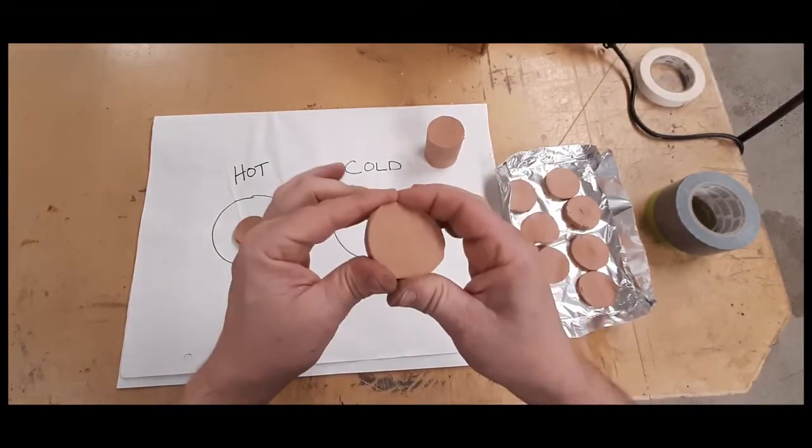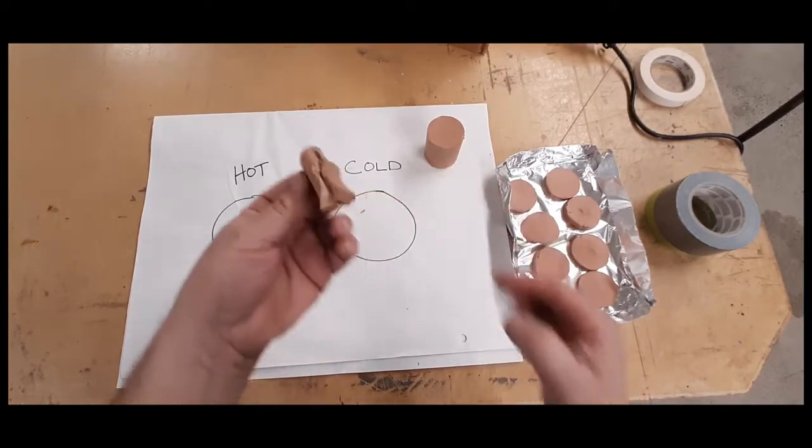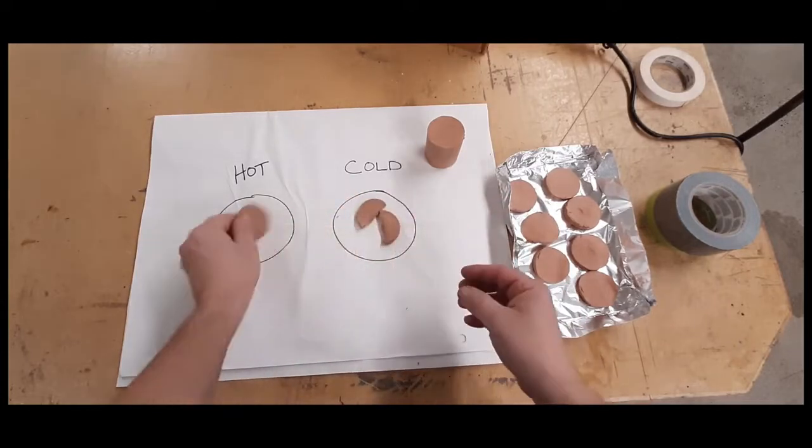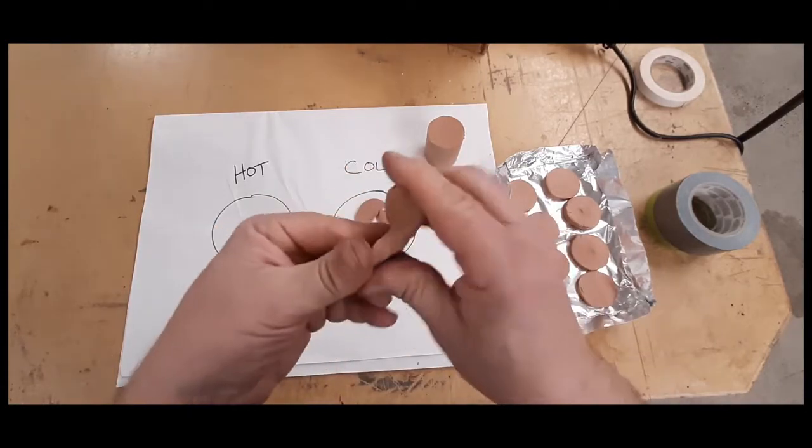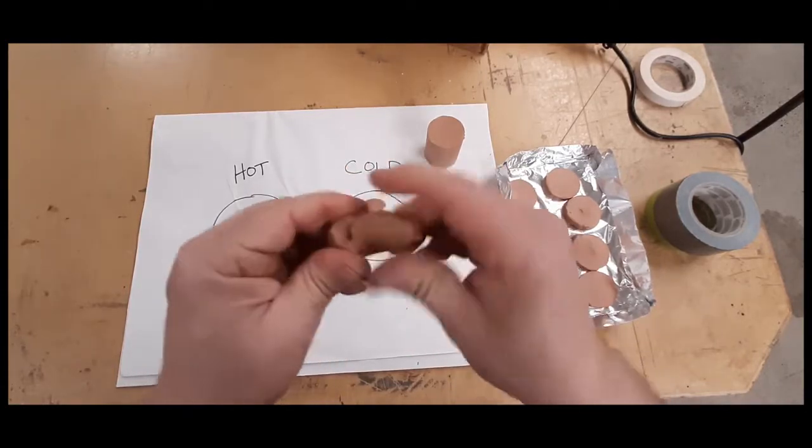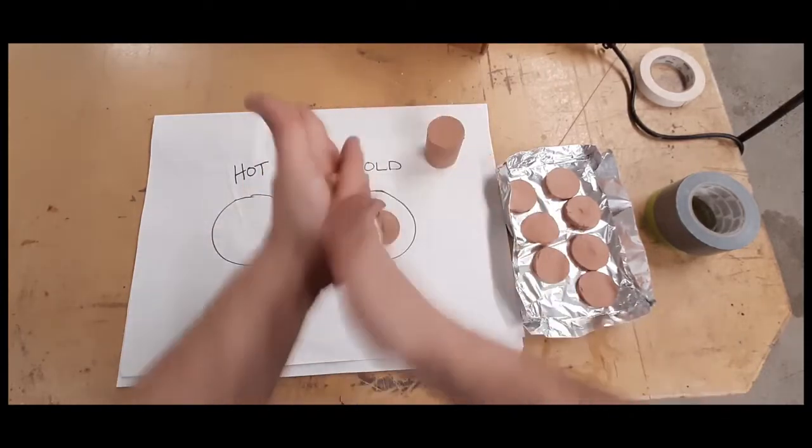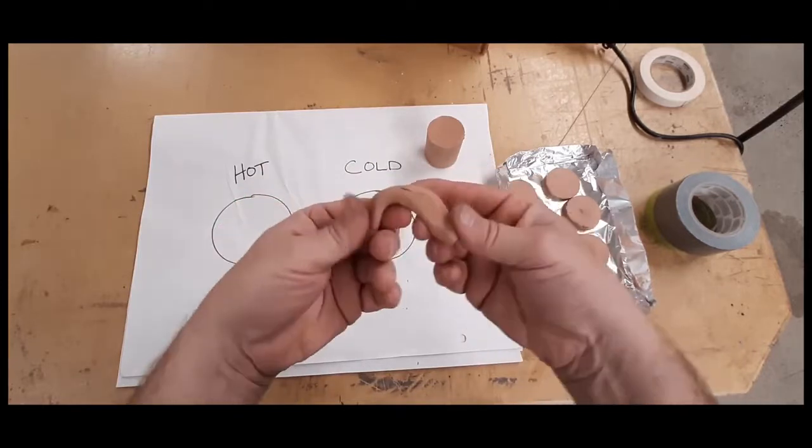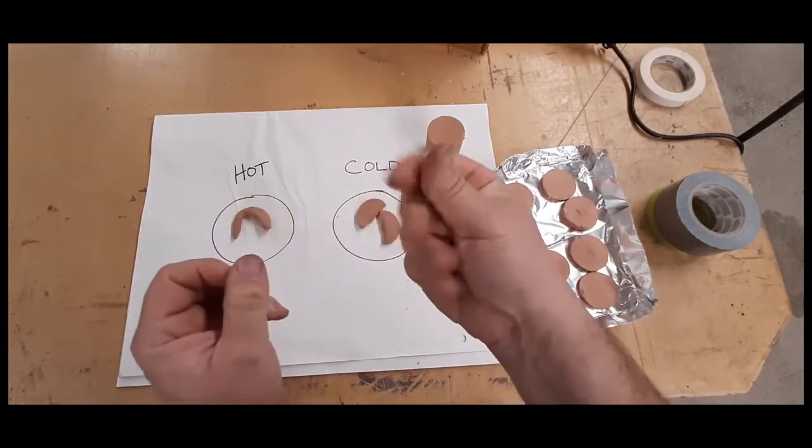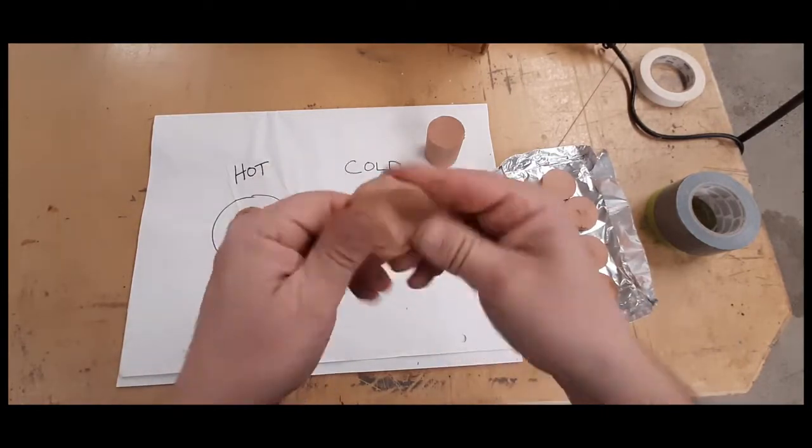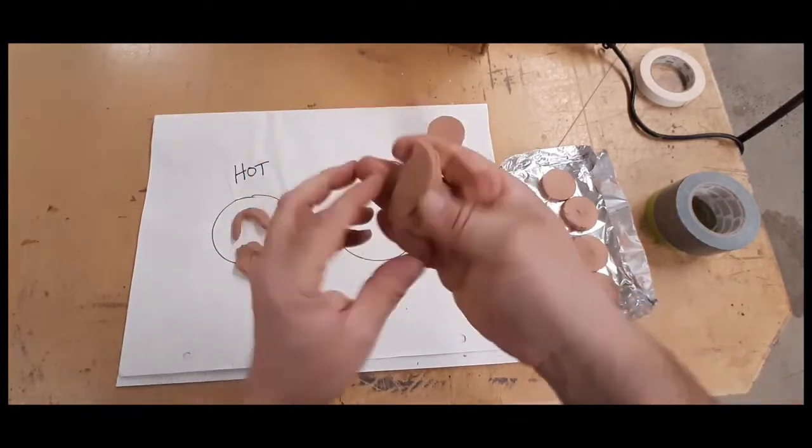Cold clay is very hard and brittle and can't be formed. Hot clay is nice and malleable and ready to be applied to your model. Remember, only take out as much clay as you can apply to your model at any given time. Leave the rest of the clay you've cut up in the oven to stay warm.